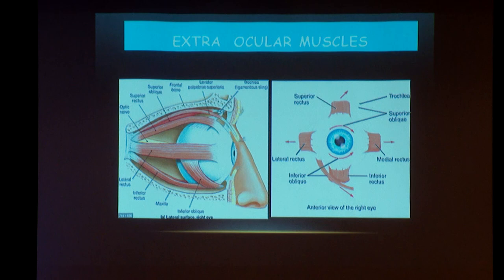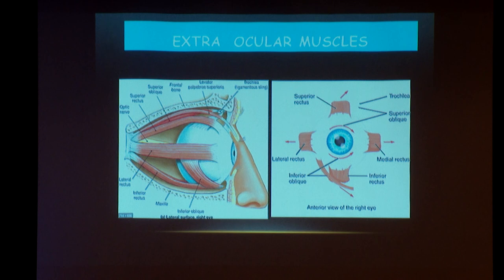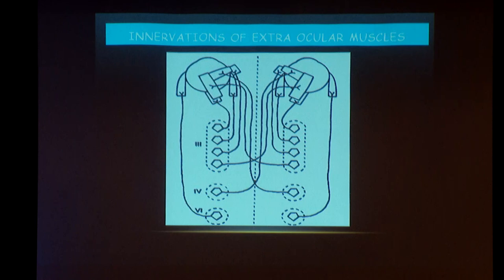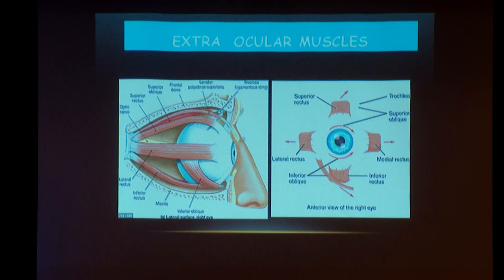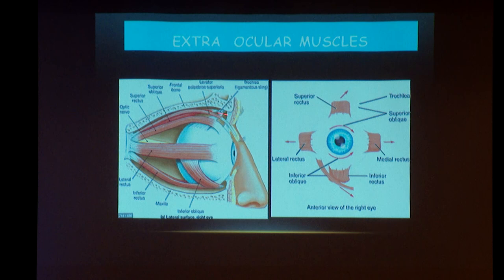We have two oblique muscles: superior oblique and inferior oblique. When the superior oblique contracts, it causes intorsion of the eye — pulling the upper pole of the eye medially towards the nose and slightly downwards. When the inferior oblique muscle contracts, it causes extorsion of the eye — the upper pole of the eye moves away from the nose. We should know the actions of the oblique muscles to understand the torsional component of vertical nystagmus.